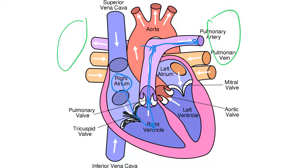All those capillaries combine together to become a pulmonary venule, then a pulmonary vein, and then the blood comes back as the pulmonary vein — but it's oxygenated now, returning to the heart.